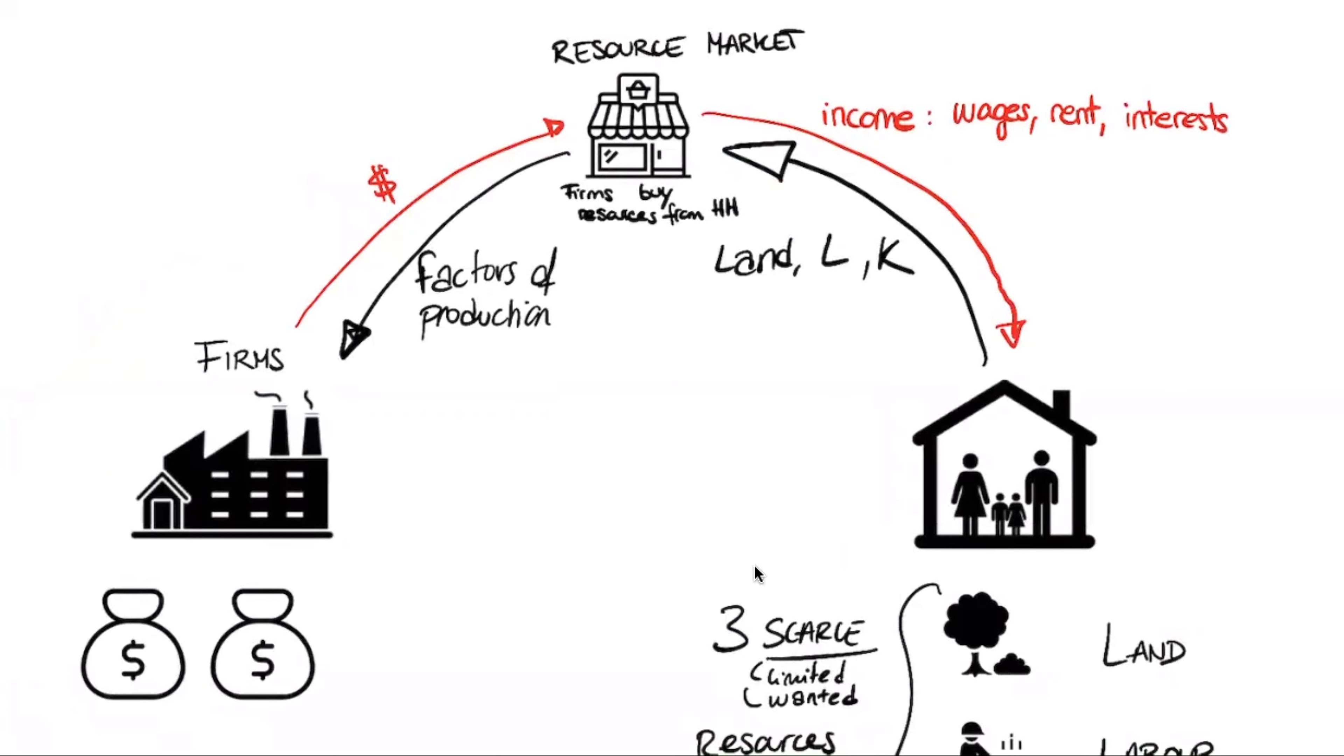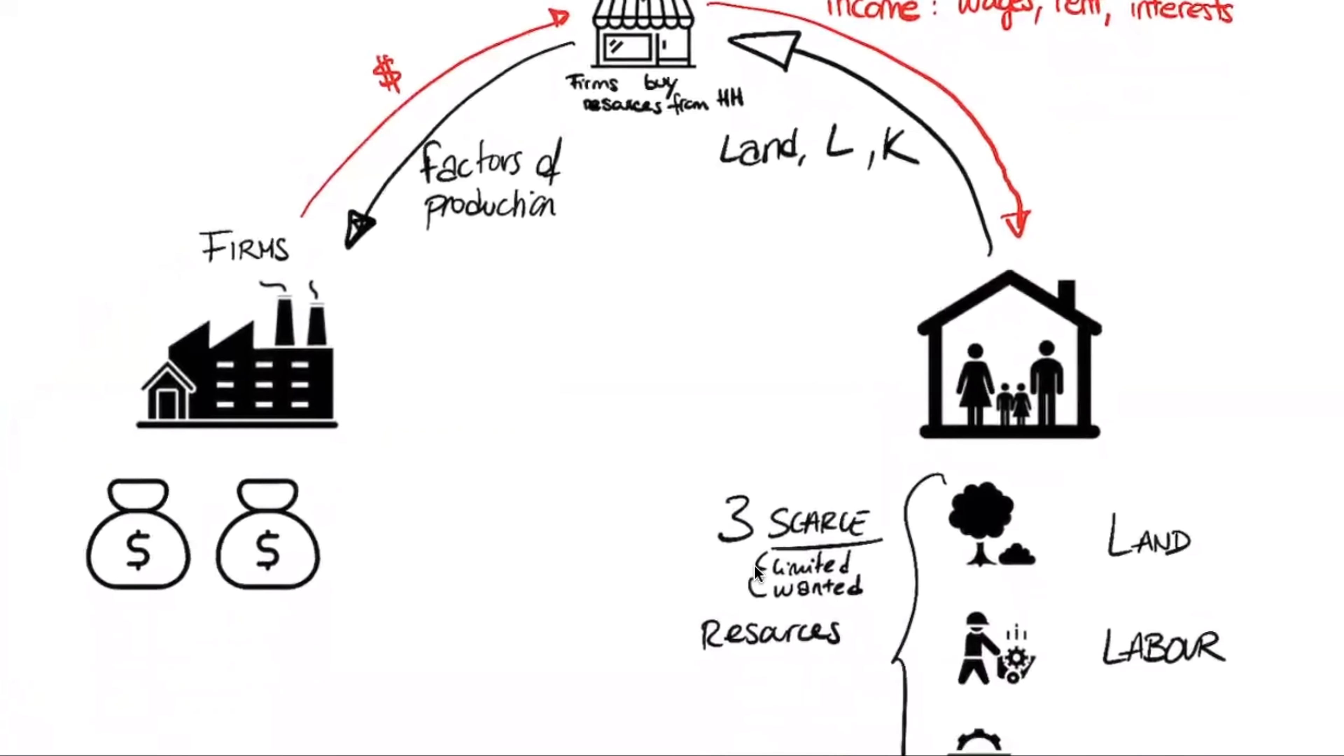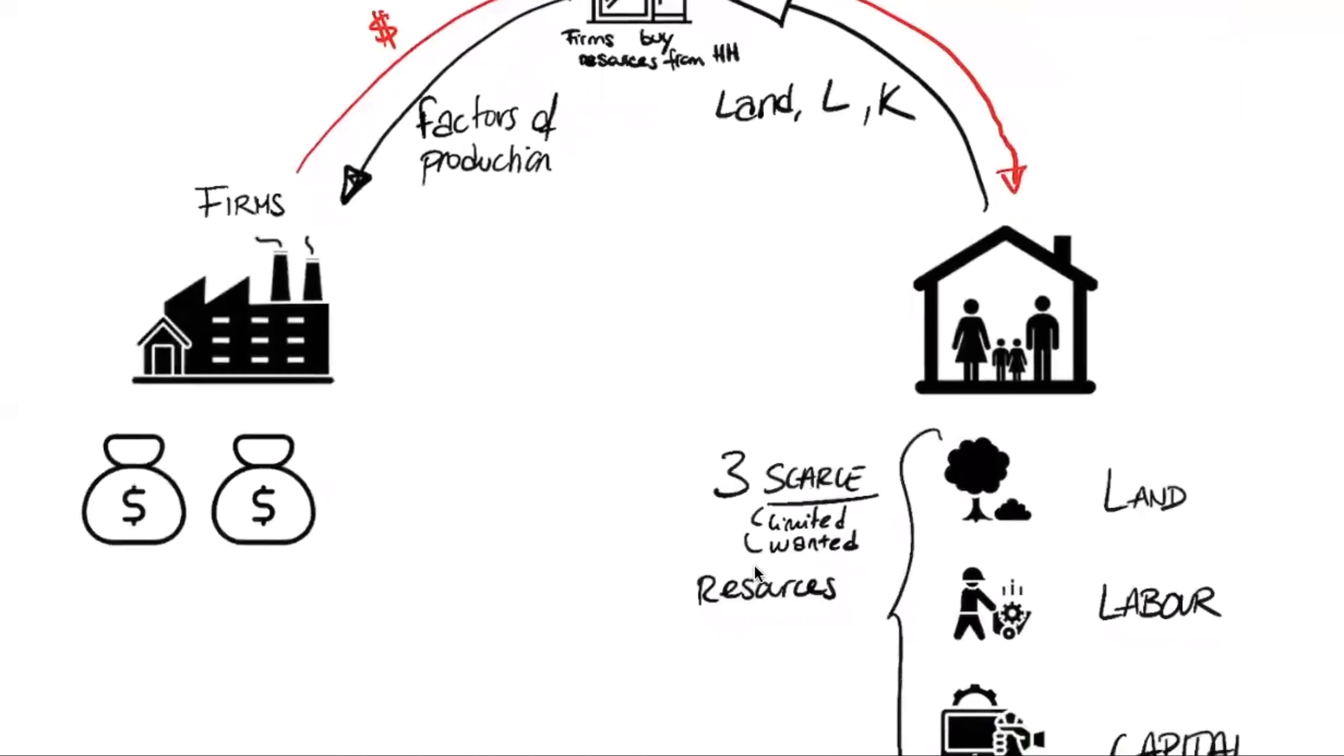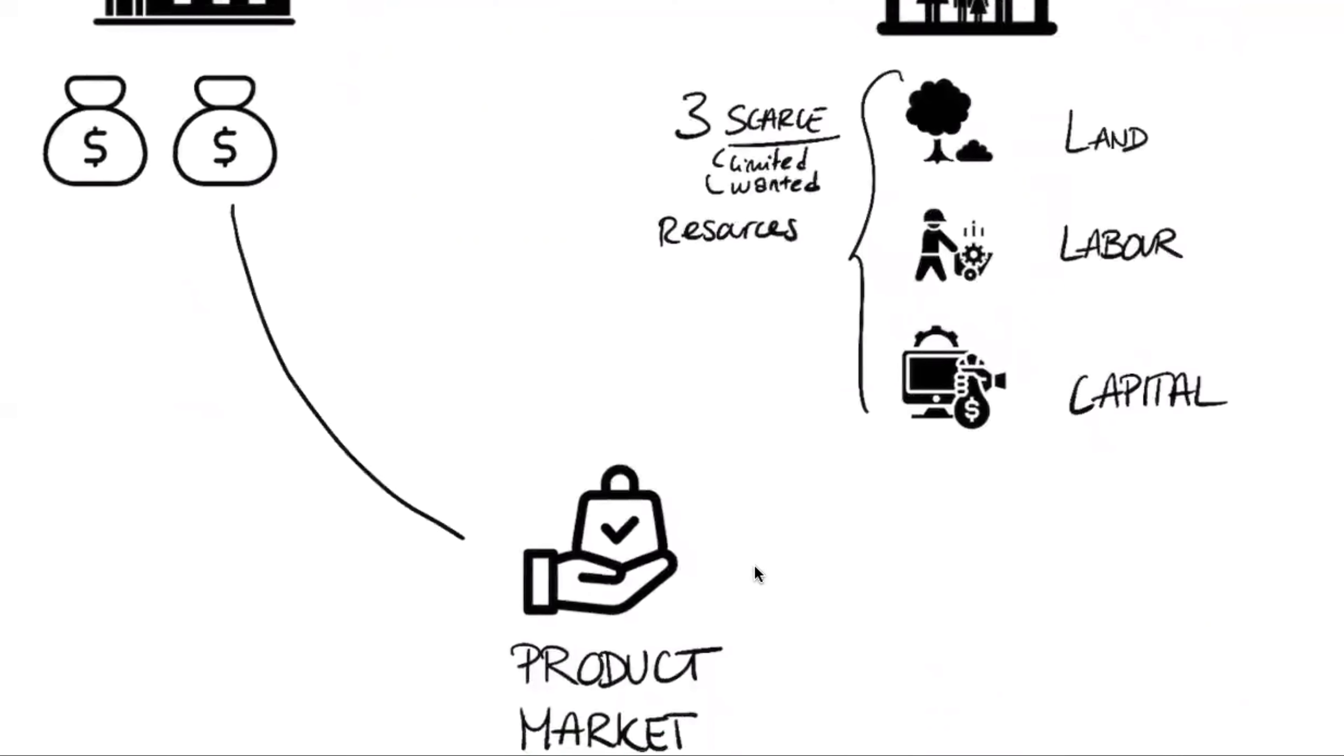And now, what do the firms do with what they get, the resources they get? Of course, they produce goods. And these goods, they are put into the product market down here. So that's goods and services.